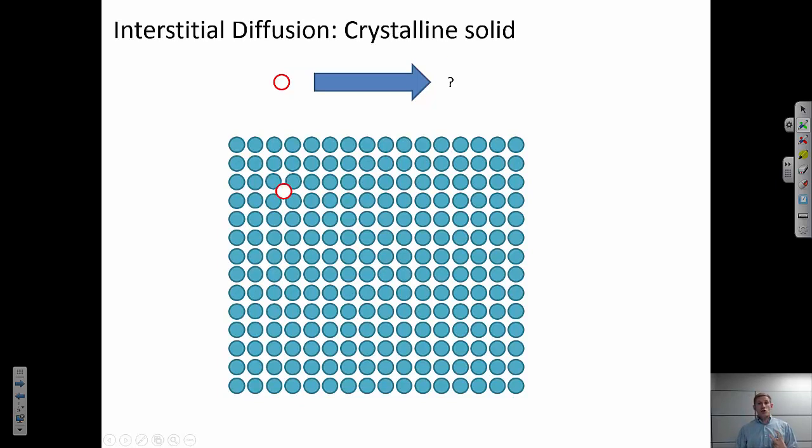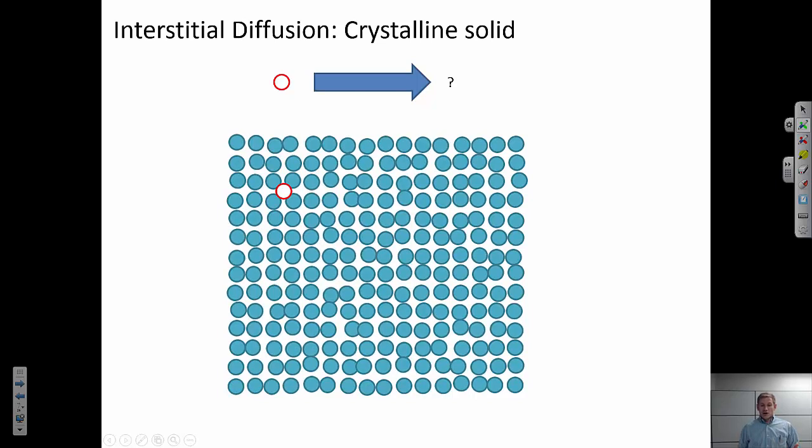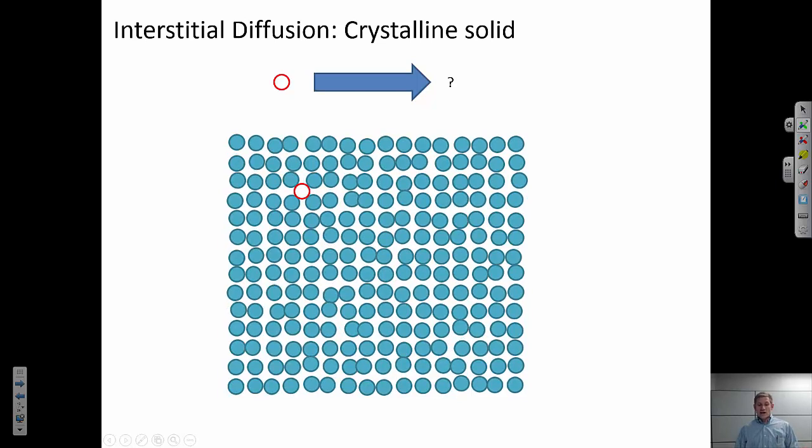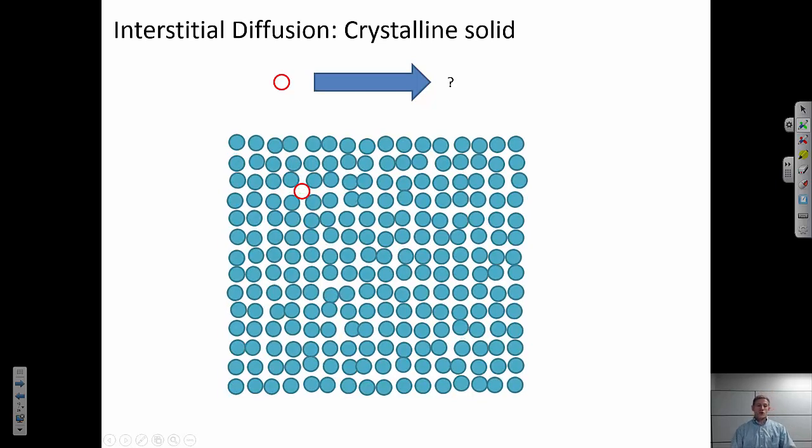So let's talk about the two principal mechanisms of diffusion. First is going to be interstitial diffusion. And in this case, the atom that I'm thinking about is sitting in an interstitial site. So again, at any temperature, all those neighboring atoms are vibrating a little bit. And at some point, if the temperature is high enough, there's some probability that this atom is going to move. See? So in this case, it's hopping to the right.